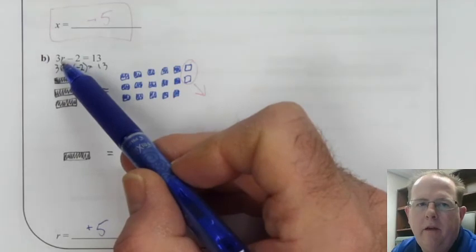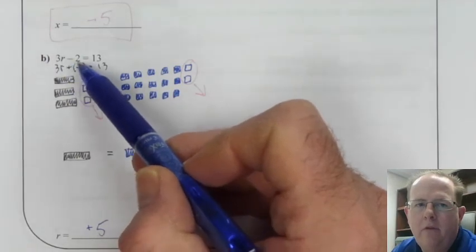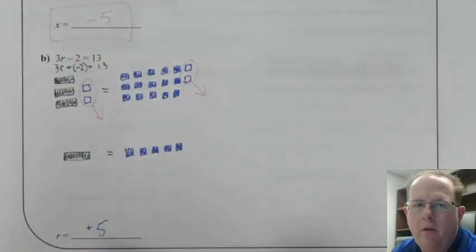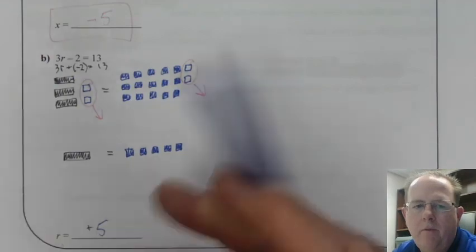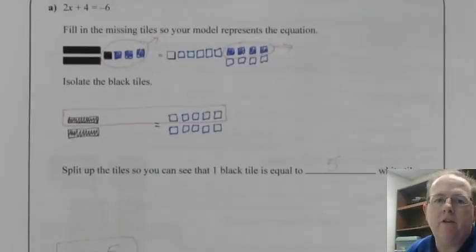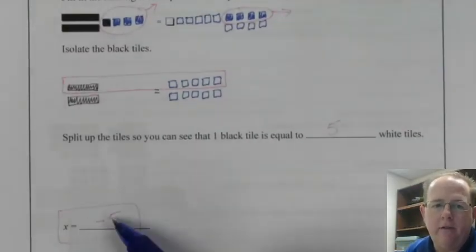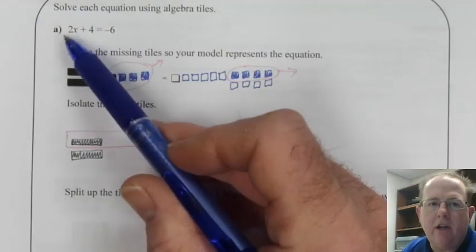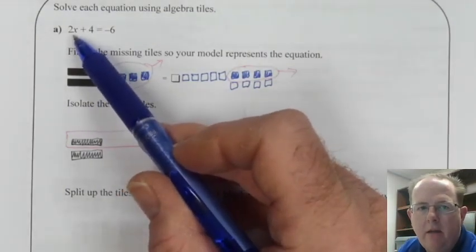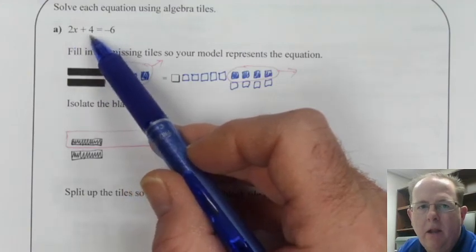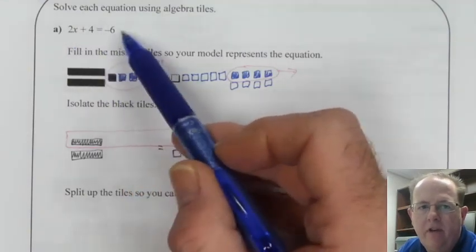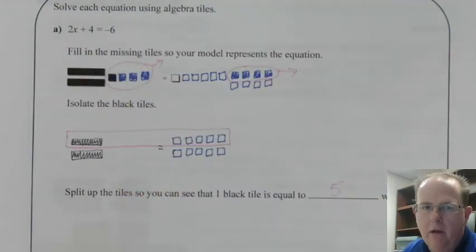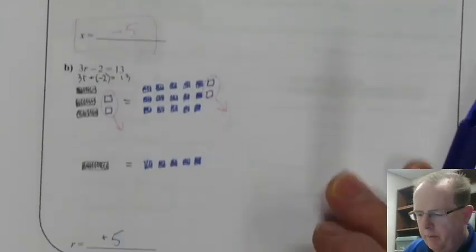3 times 5 is 15. Subtract 2 is 13. That's on the right-hand side. So 5 is correct. I didn't go back and verify this one, did I? I said that x was equal to negative 5. Let's check it. 2 times negative 5 is negative 10. Negative 10 plus 4 is negative 6. So yes, that does match. So we know that both of our answers are correct.